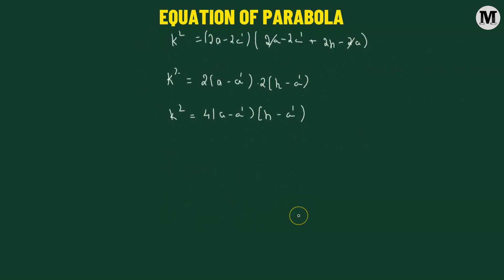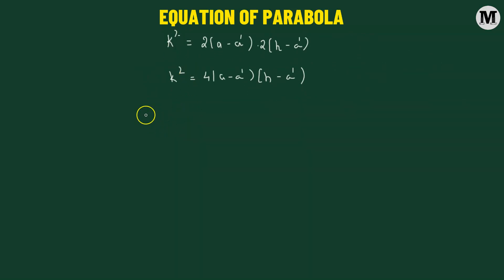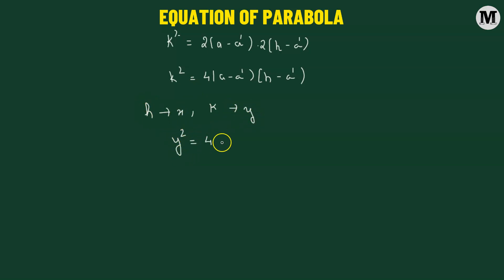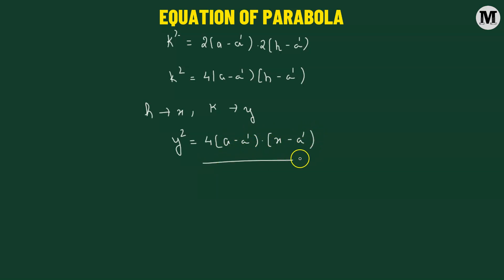We're almost there. In the final step, we replace h with x and k with y, giving us y squared equals 4 times a minus a prime times x minus a prime. This is the required equation of the parabola, with the focus at a, 0 and vertex at a prime, 0.